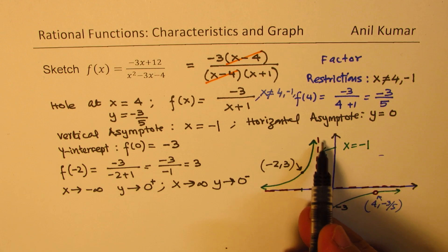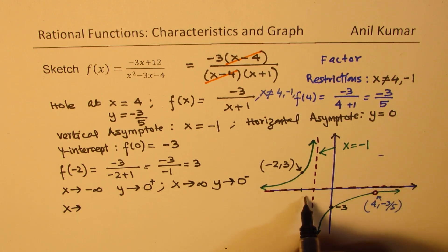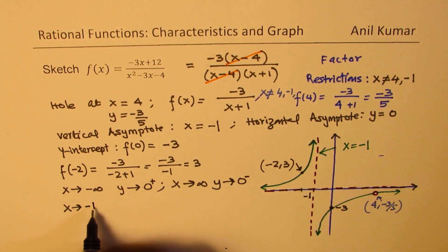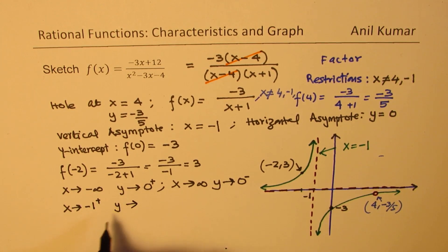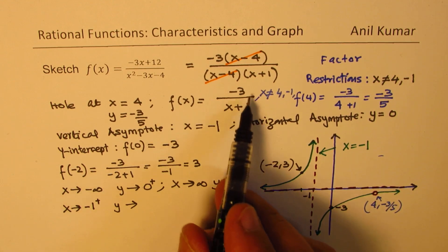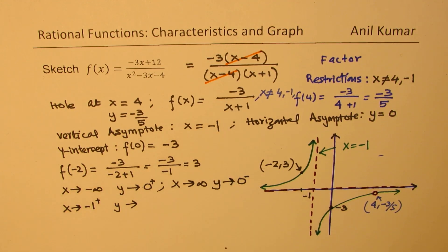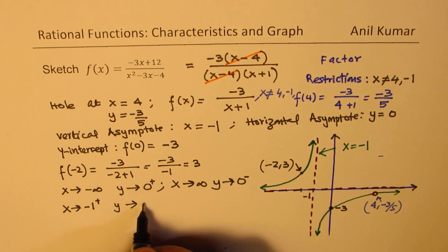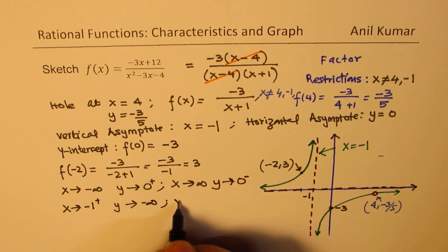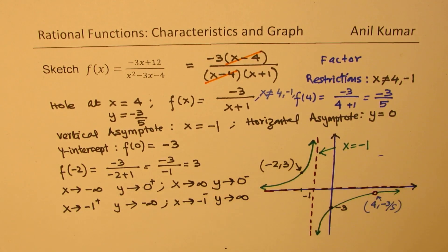Now let's look at the behavior near the vertical asymptote at x equals minus 1. When x approaches minus 1 from the right (written as minus 1 plus), substituting a value like minus 0.9: the numerator is negative and the denominator is a small positive number, so y approaches negative infinity. When x approaches minus 1 from the left, the y value approaches positive infinity. So that is the behavior near the vertical asymptote.